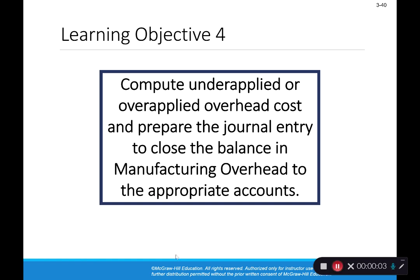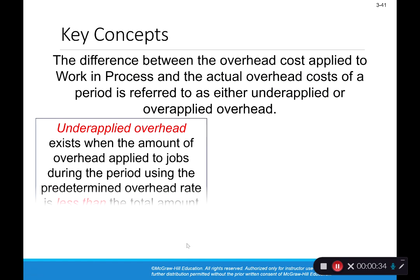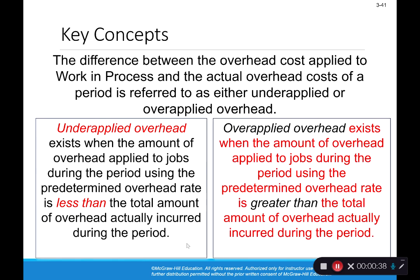We're talking about under and over applied overhead. Because we're using a predetermined overhead rate, we're estimating overhead and won't get it exactly right, so there will be differences between actual overhead and what we apply. If we apply too much it's over applied; if we apply too little it's under applied. Now we're going to determine how we actually fix that at the end of the period.